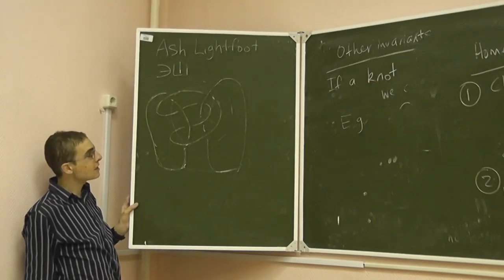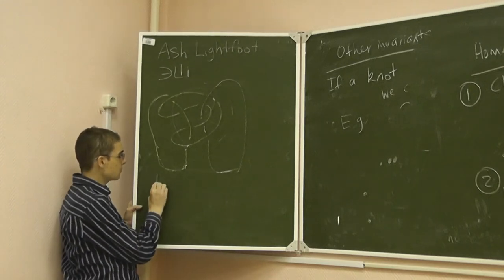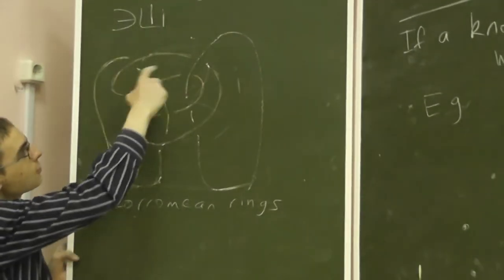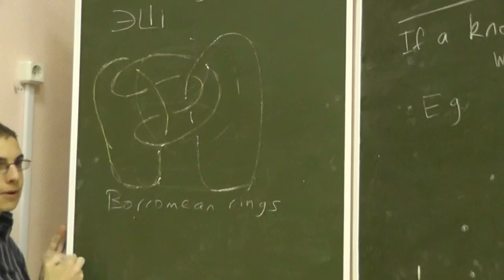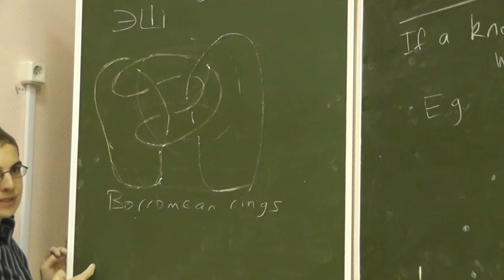Firstly, convince yourself that you can't—so what I've drawn is a link with three components, these are called the Borromean rings. There are three circles here, it's a three component link. And so firstly, convince yourself that you can't pull this apart.